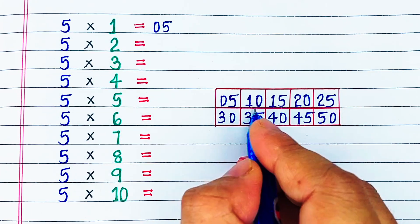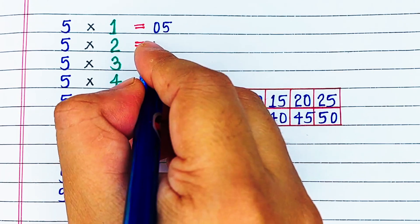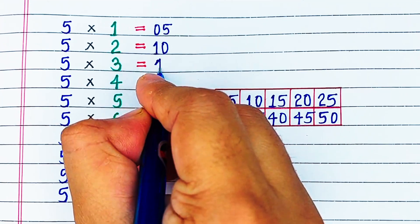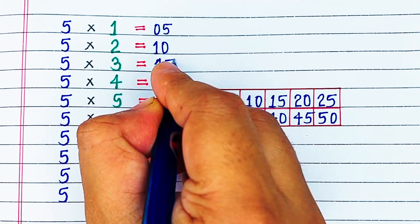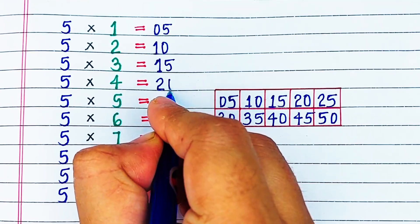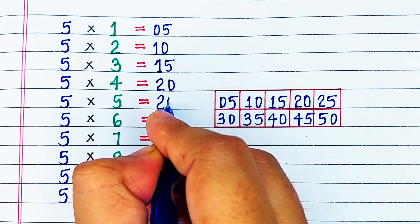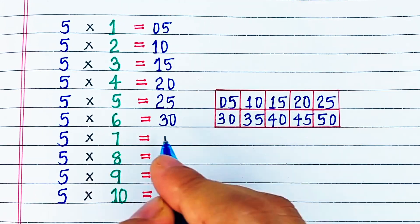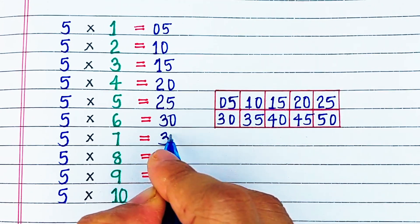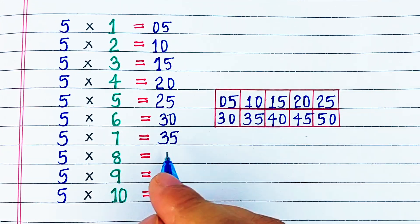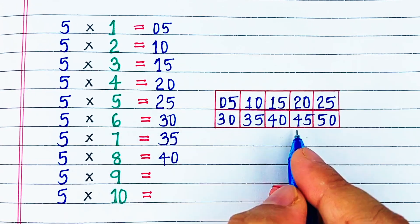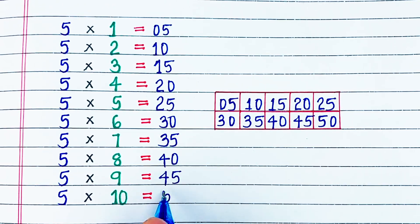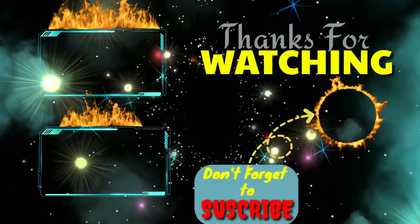5 1s are 5, 5 2s are 10, 5 3s are 15, 5 4s are 20, 5 5s are 25, 5 6s are 30, 5 7s are 35, 5 8s are 40, 5 9s are 45, and 5 10s are 50.